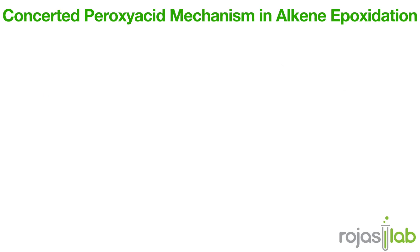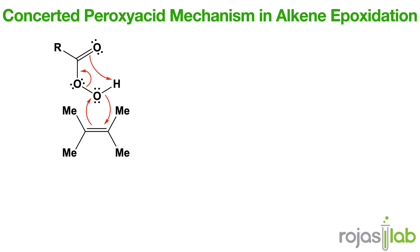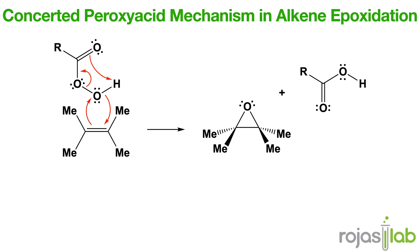Now let's talk about the epoxidation of alkenes. In this reaction, we're doing an oxidation of an alkene to an epoxide, generally using a peroxy acid like MCPBA (metachloroperoxybenzoic acid). This is a concerted mechanism that results in the transfer of an oxygen atom from the peroxy acid to the alkene. This always results in syn addition and retains the stereochemistry. Key points are that it's stereospecific because alkene geometry is retained, and typically no intermediates form because it's a concerted mechanism.